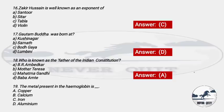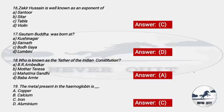Question 19: The metal present in hemoglobin is — The right answer is option C — Iron. Iron is present in RBCs; hemoglobin is actually present within them. So the right answer is Iron.